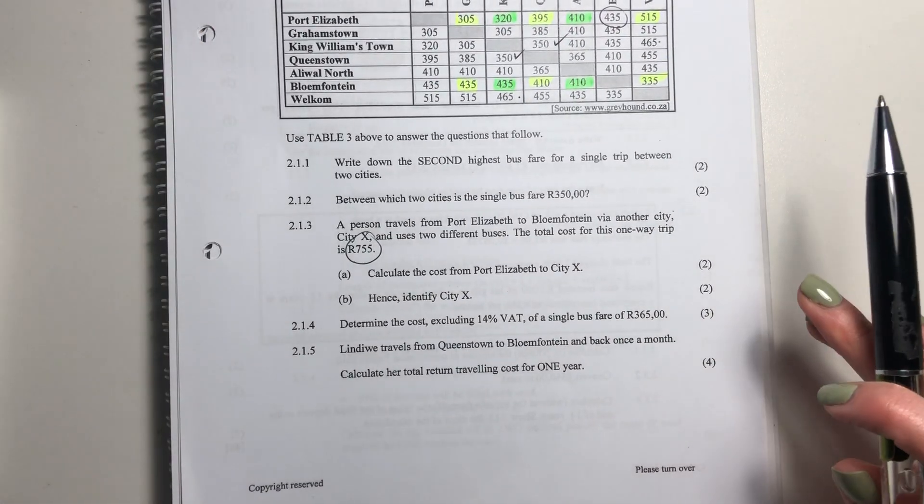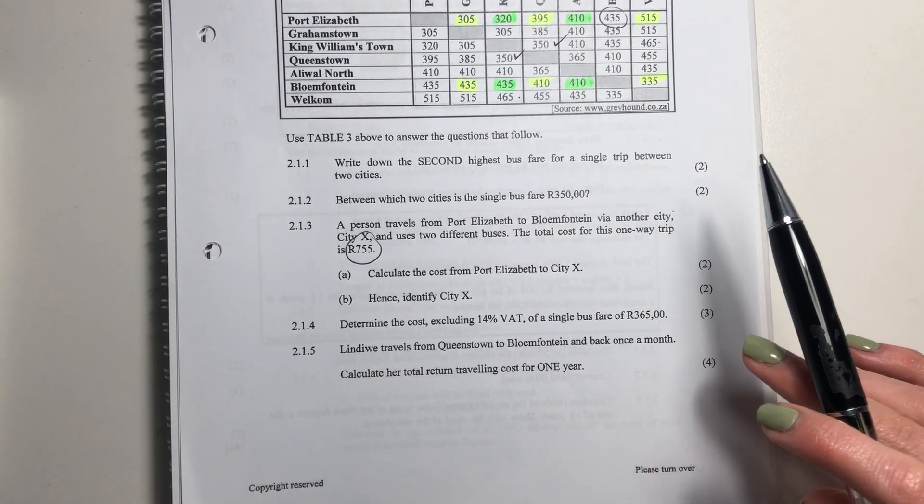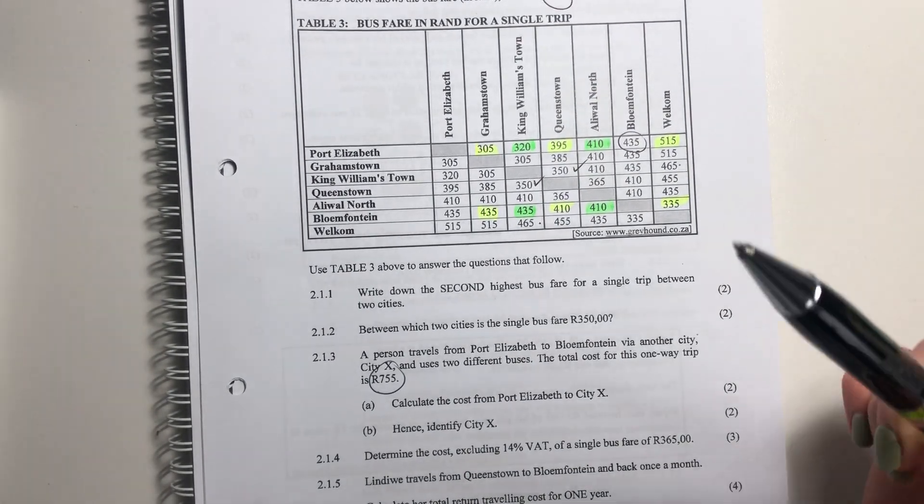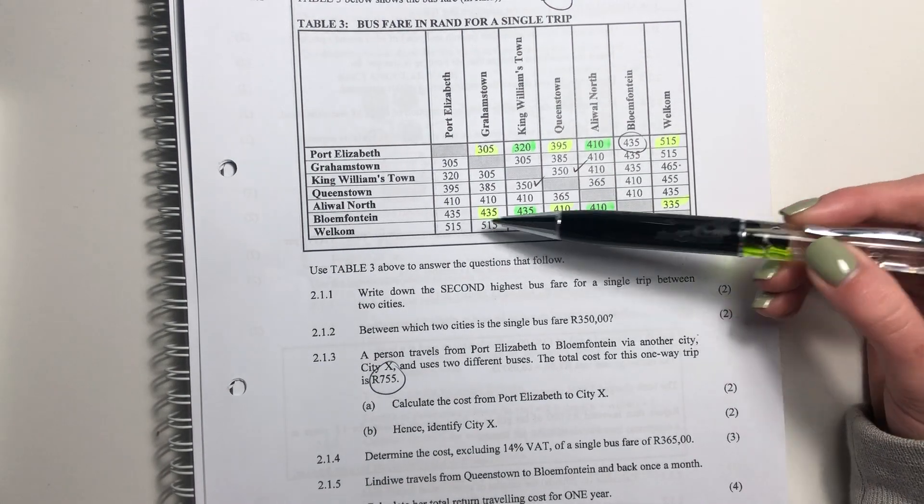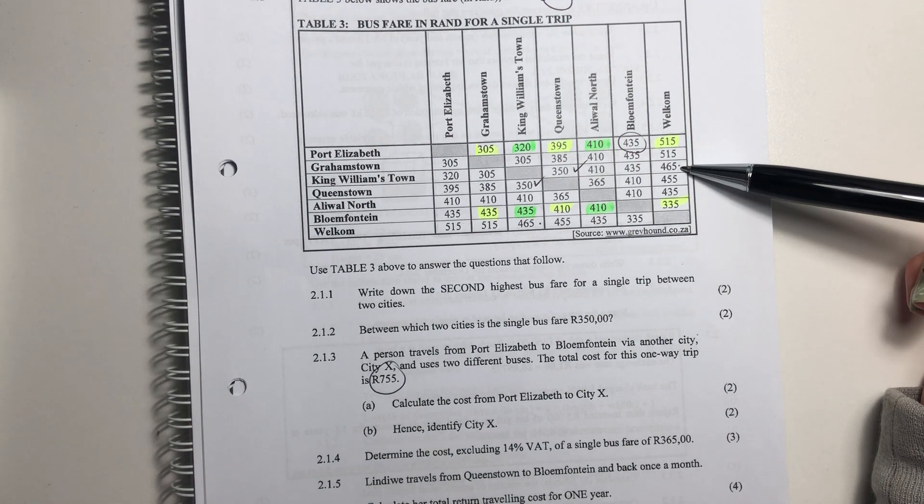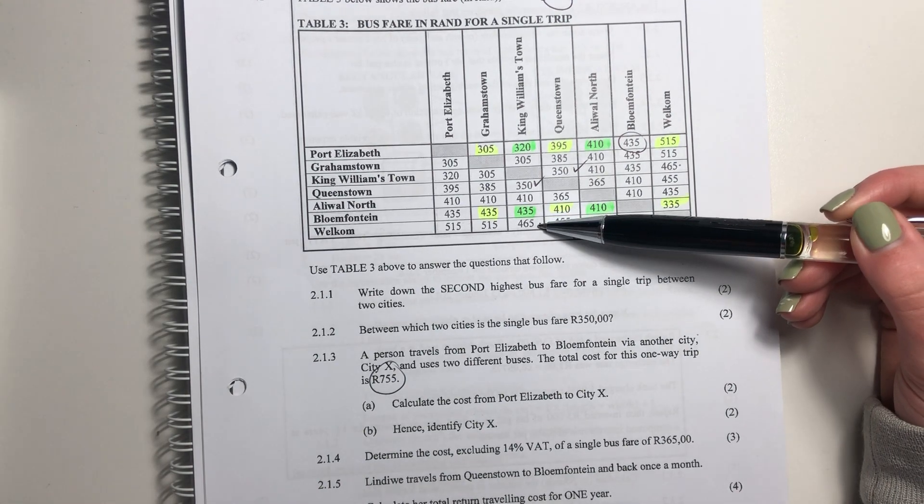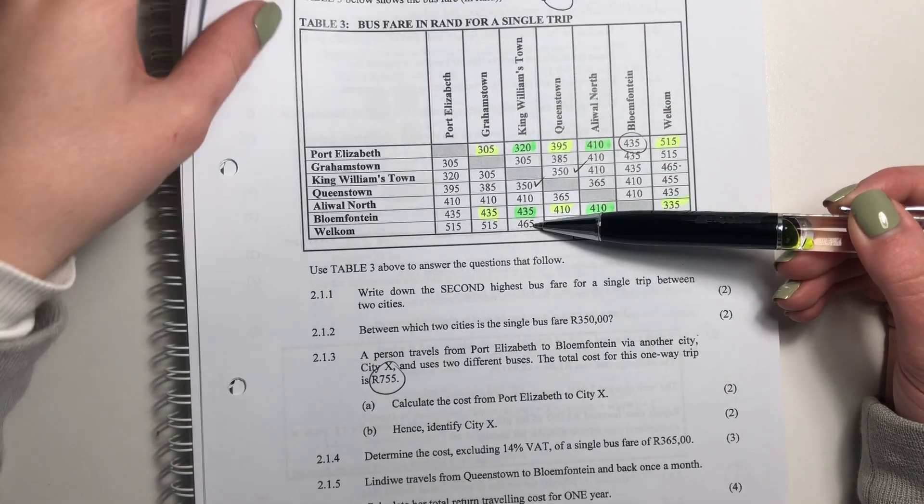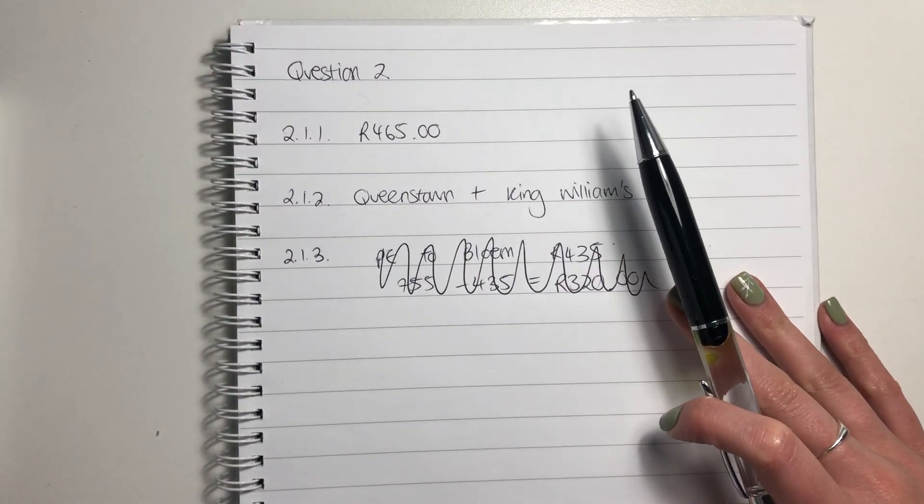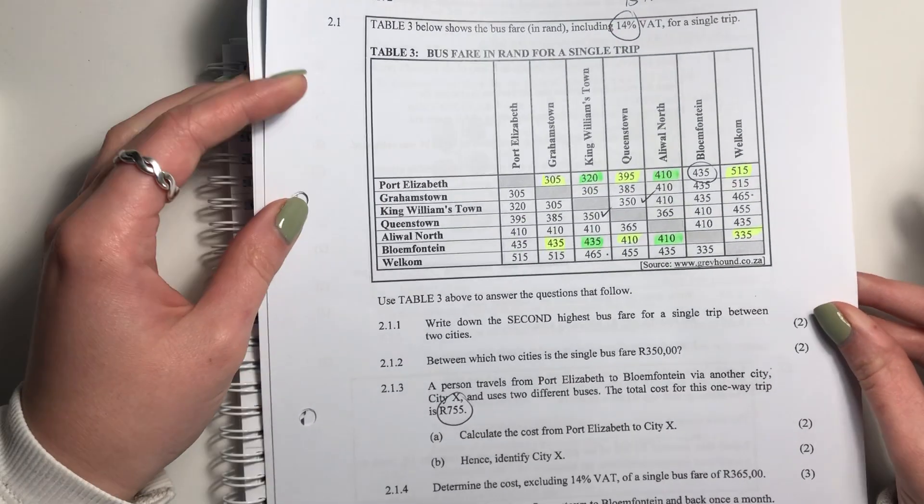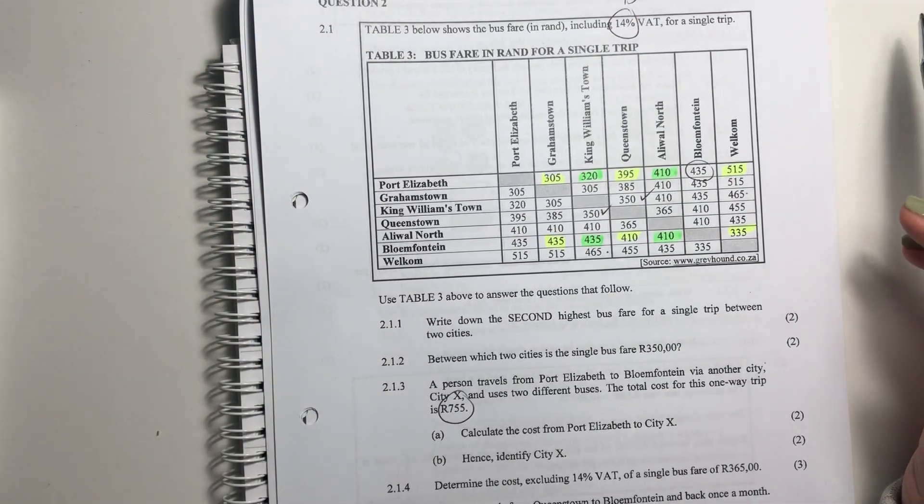So it says here, write down the second highest bus fare for a single trip between the two cities. So if you just look, and this takes a bit of practice, but if you look over this, the most expensive is 505, and then the second most expensive is 465, which would be Valcom, right? So it doesn't ask us to say where it was. It asks us to say what is the amount. So we say 465 rand. Please make sure that you put in your units because that's where a lot of students lose marks.